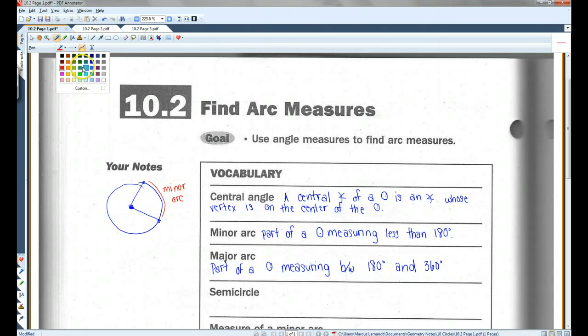Let's use green. A major arc, this would be a major arc. A major arc is a part of a circle measuring between 180 degrees and 360 degrees. Now, a straight line is 180 degrees. A full circle is 360 degrees.